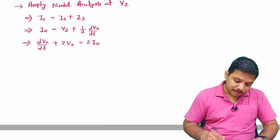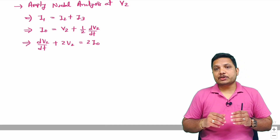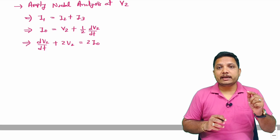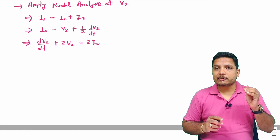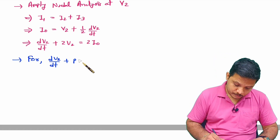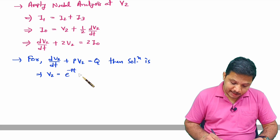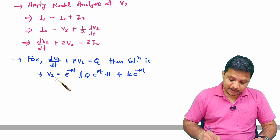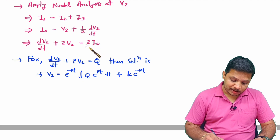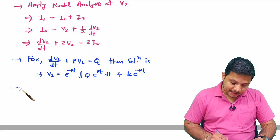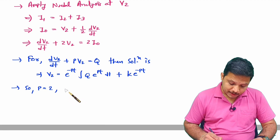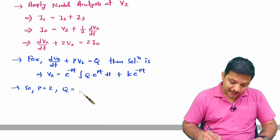Now we need to simplify this equation. We should know the standard form: if dV2/dt plus P times V2 equals Q, then the solution is e^(-Pt) times the integral of Q times e^(Pt) dt, plus constant K times e^(-Pt). Comparing our equation with this standard form, we get P equals 2 and Q equals 2I0.